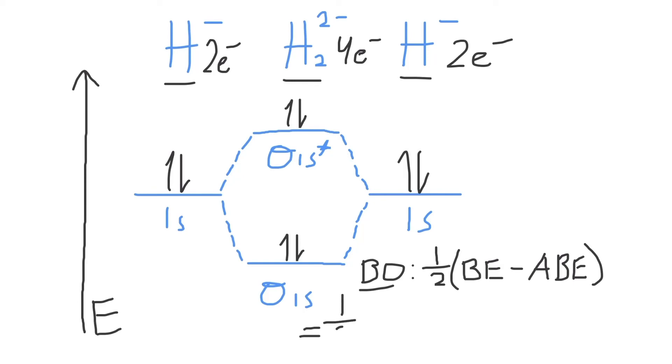For H2 2-, there are two bonding electrons and two antibonding electrons. 2 minus 2 equals 0, showing us that these two pairs of electrons in the molecular orbitals will cancel out, leaving us with a bond order of 0.